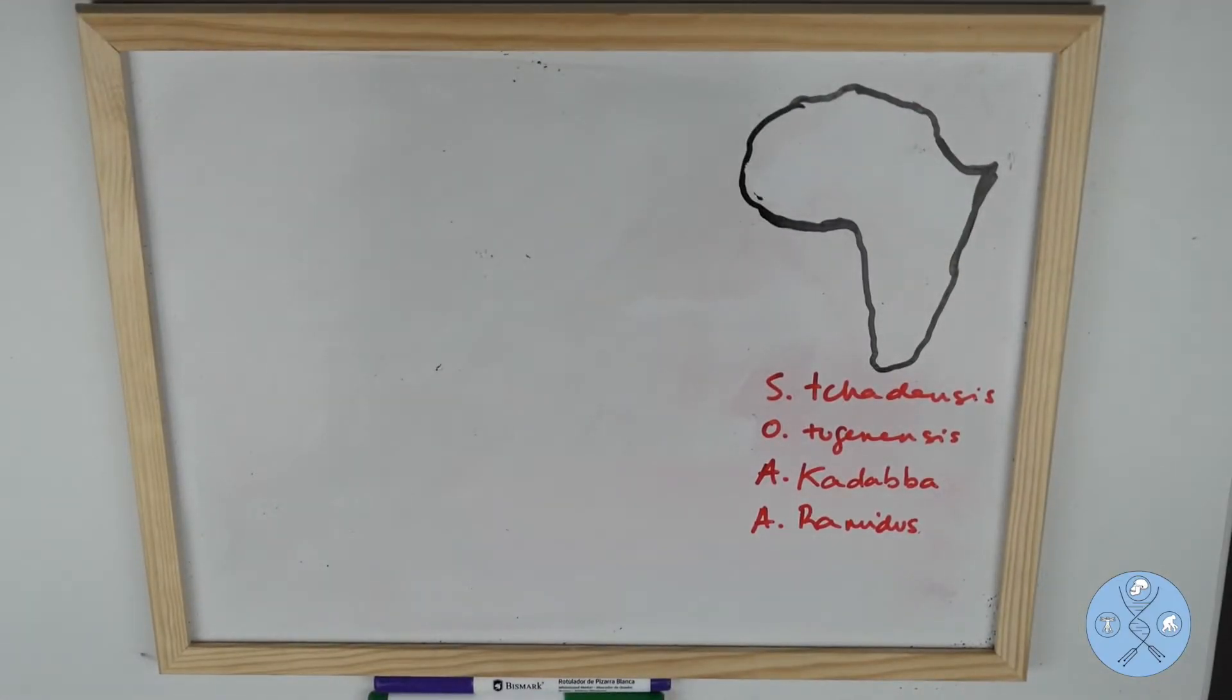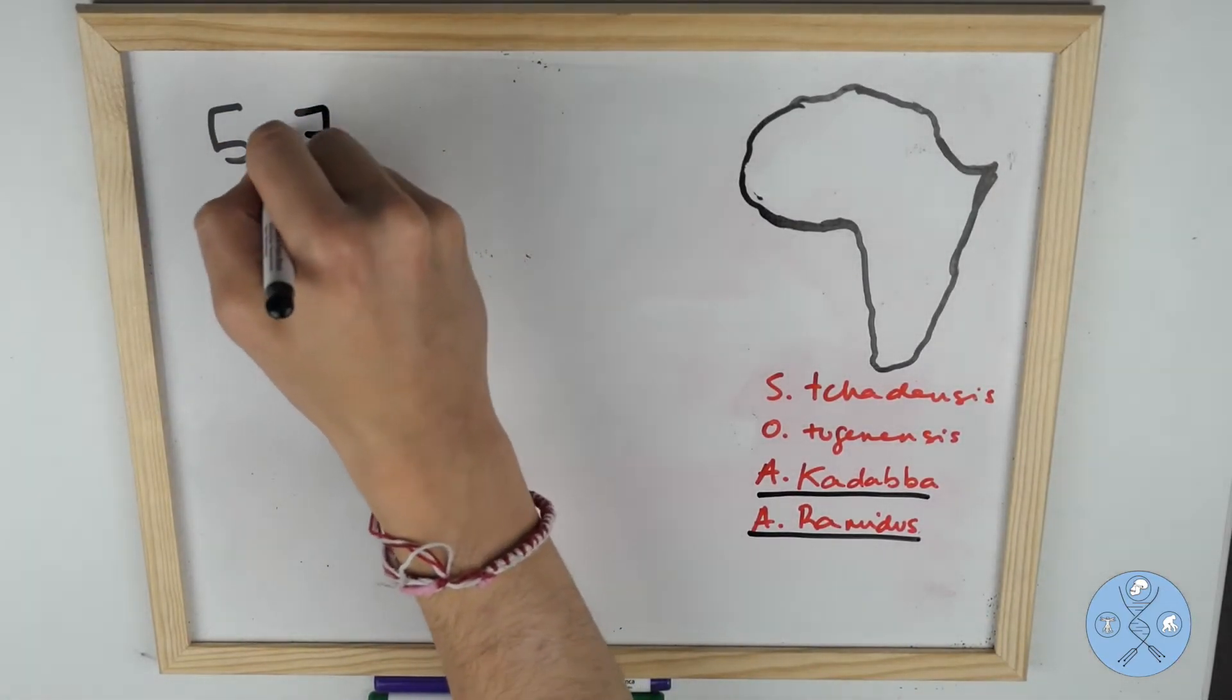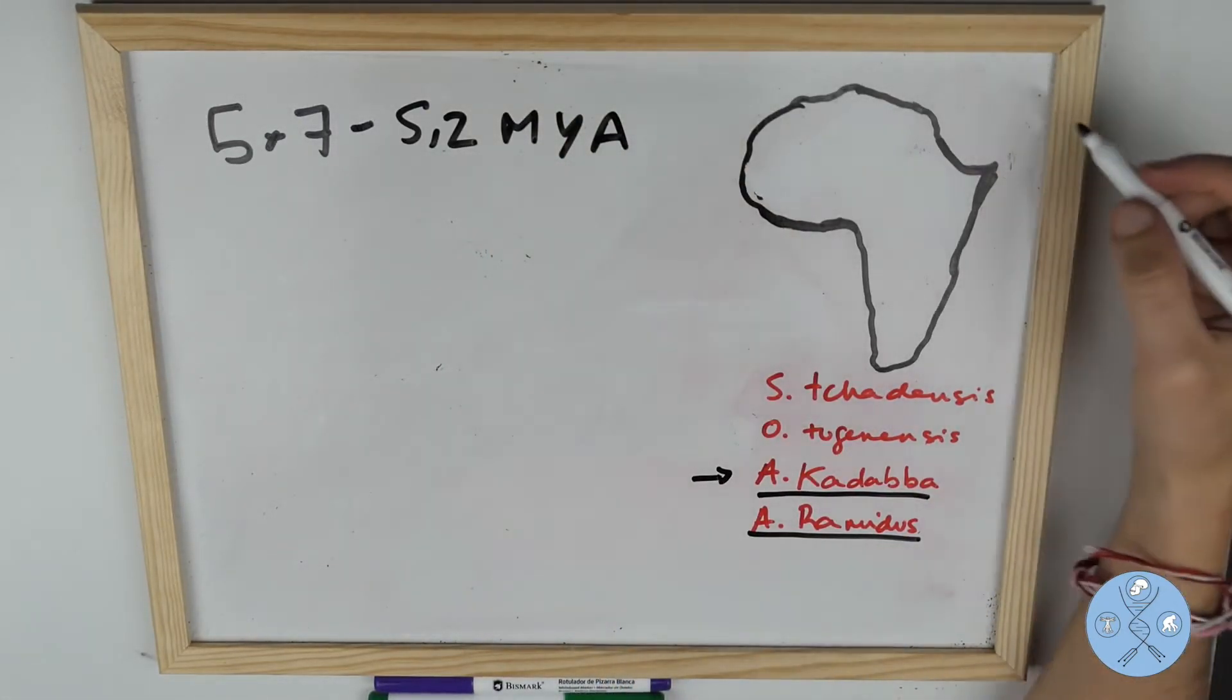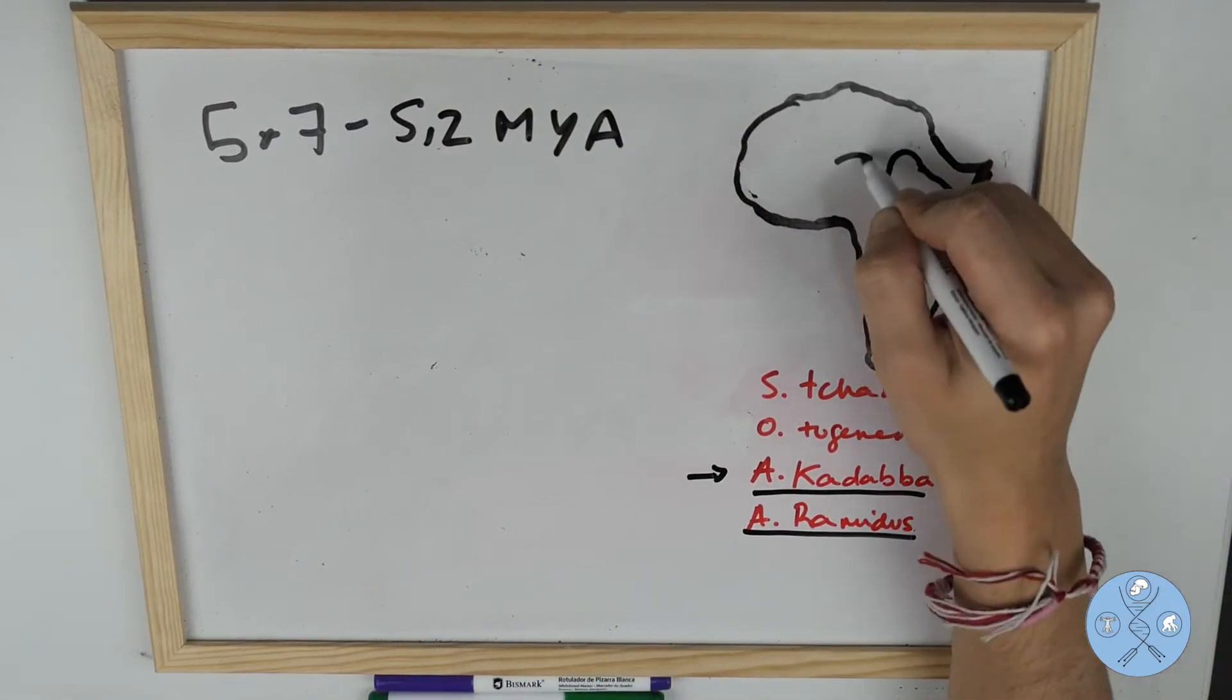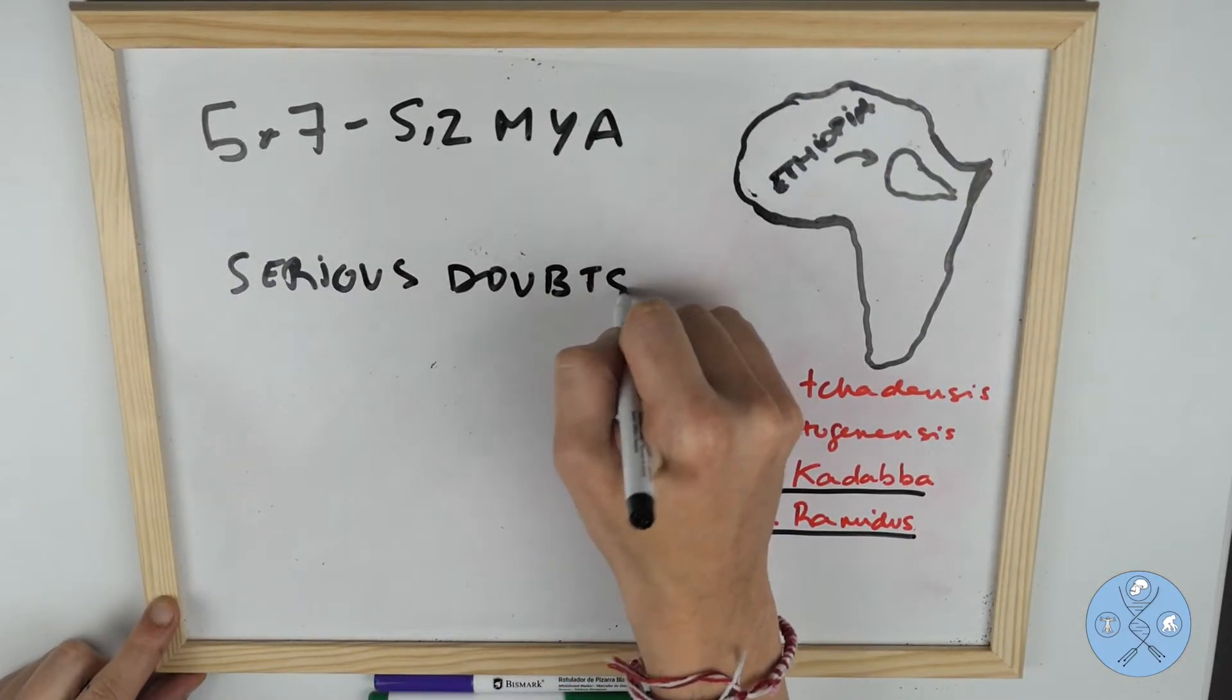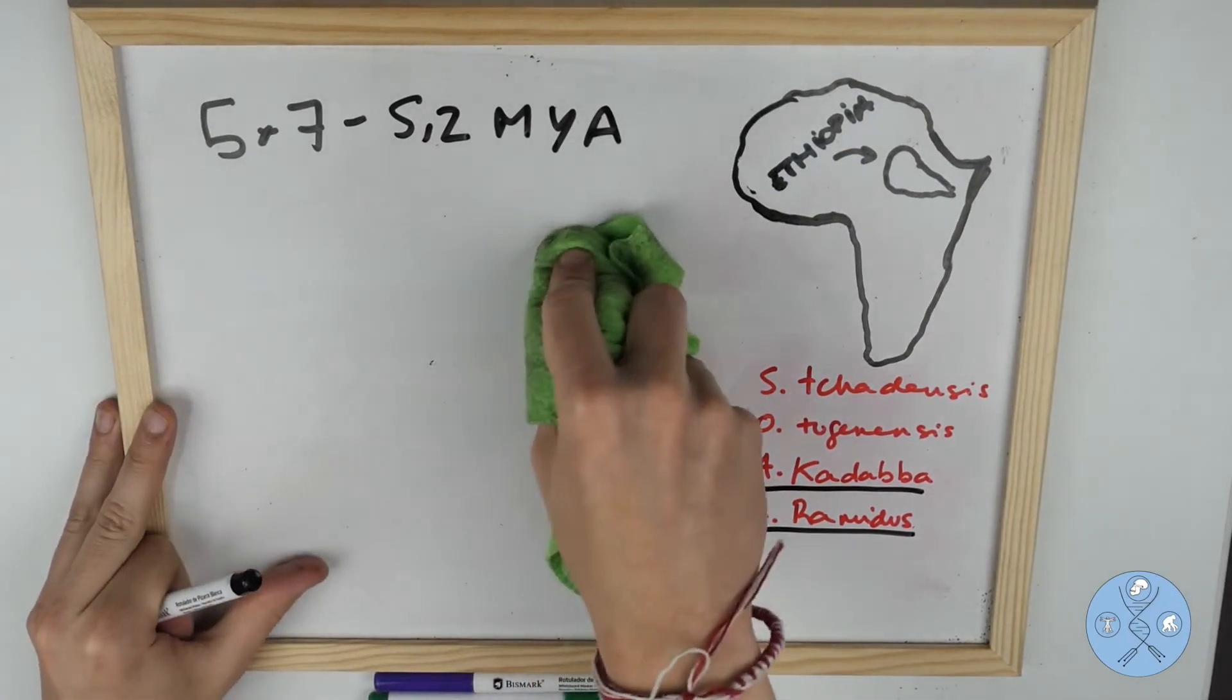The other two fossil collections that might be from an early hominin are both included in the same genus, Ardipithecus. The oldest fossil collection from 5.7 to 5.2 million years ago is assigned to Ardipithecus kadabba from the Middle Awash region of Ethiopia. However, considering Ardipithecus kadabba as a hominin is not a strong position as there are strong doubts about it.